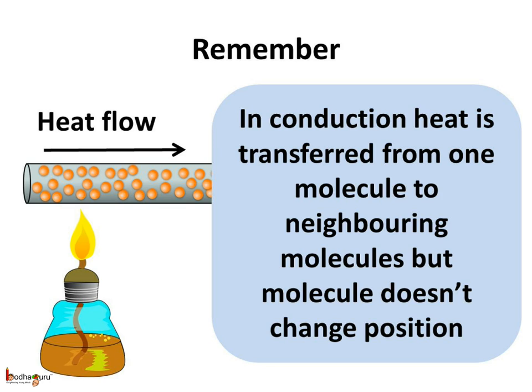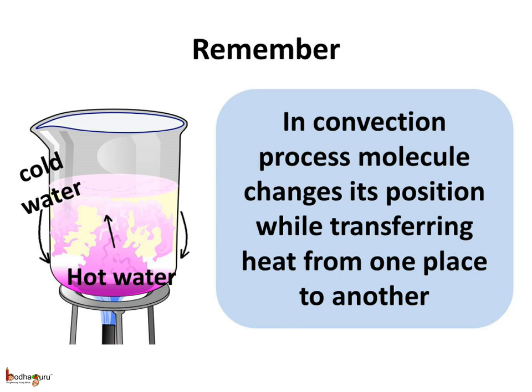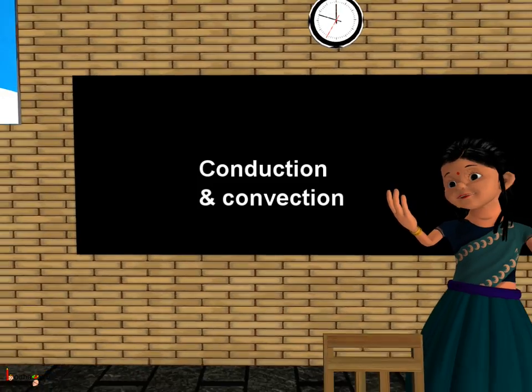Let's revise how heat flows through matter. Heat flows through solids by the conduction process — heat energy is transferred from molecule to molecule, but the molecules remain at their position only. Heat flows through liquids and gases by the convection process — during convection, molecules change their position. For example, when we heat water on the stove, the hot water from the bottom becomes light and rises up, the cold water comes down to receive heat, and thus molecules change places to transfer heat.